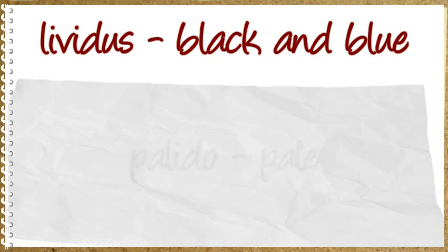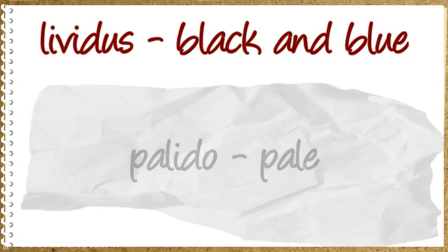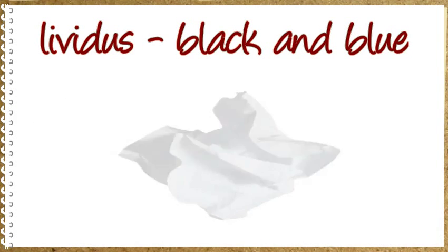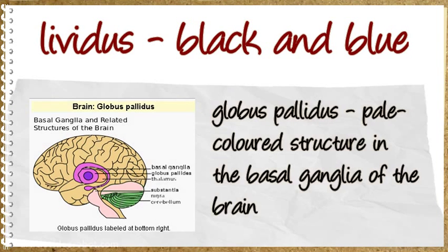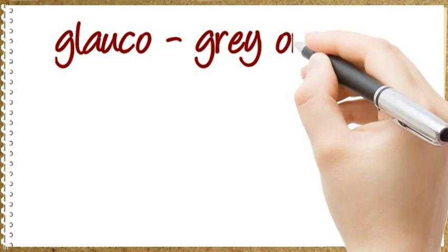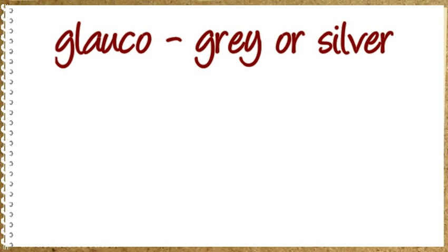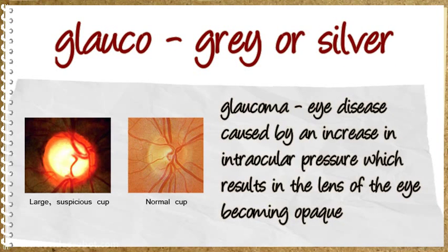Polito means pale. Globus Pallidus: pale colored structure in the basal ganglia of the brain. Glauco means grey or silver. Glaucoma: eye disease caused by an increase in intraocular pressure which results in the lens of the eye becoming opaque.